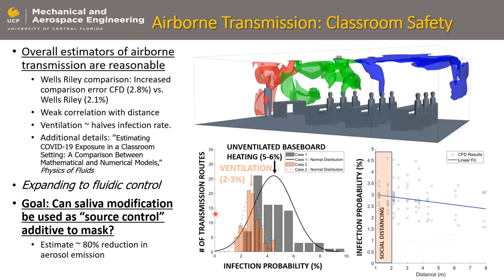The other thing we're studying is airborne transmission. We just have a paper out studying classroom safety. Using advanced modeling, we see a pretty consistent comparison with the estimators that say how safe it is to stay in a room with a certain number of infected people. The worst case scenario we found was that those numbers are twice as bad as the worst case scenario across all different transmission routes — in a classroom with nine students and one teacher. We identified the worst case transmission route, and it was only twice as bad as the estimators, which is a good thing to find.